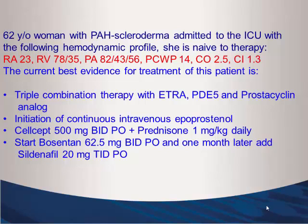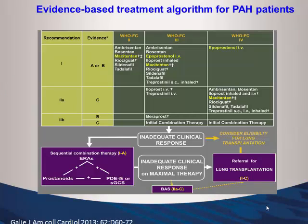The answer is initiation of continuous intravenous epoprostenol. The evidence-based treatment algorithm for PAH patients is complicated, with many medication choices. However, this is the one situation with a single medicine in a box — a 1A recommendation: WHO functional class 4. When the patient is very sick in the ICU, epoprostenol IV continuous stands alone. This comes out of the 2013 Nice conference. Initial combination therapy was also added, though it is still being studied.